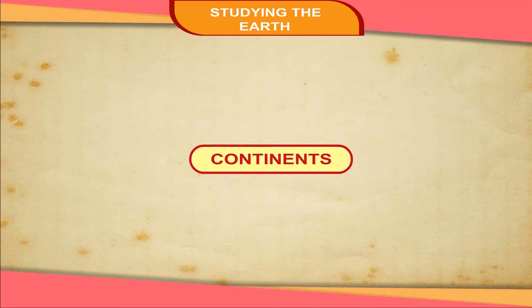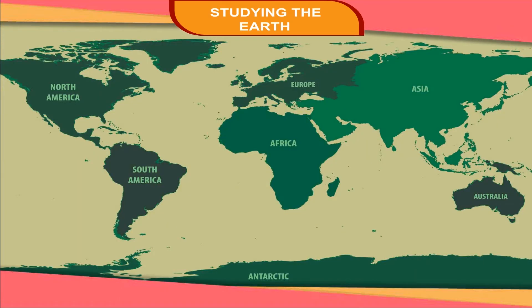Continents. The large masses of land on the Earth are called continents. There are seven continents. They are as follows.